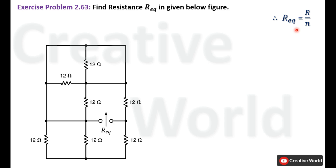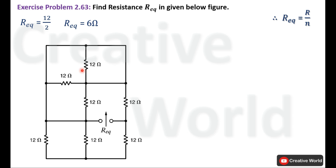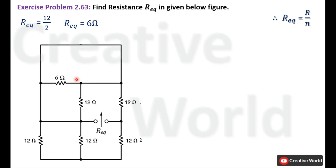In this equation, R equivalent equals R divided by N, where R is the resistance of a single resistor in the parallel connection and N is the number of same resistances connected in parallel. In this case, R is 12 Ohm and N is 2. Placing values: 12 divided by 2 gives R equivalent of 6 Ohm. We modify the circuit by replacing these two resistances with a single 6 Ohm resistance.